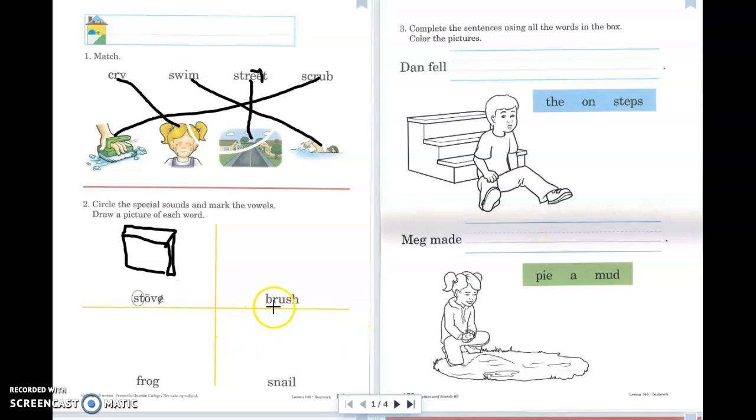The next word, I have B-R, a U, and an S-H. I only have one vowel, so the vowel is going to get the smile over it. The word is brush.